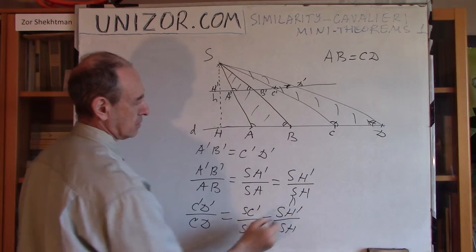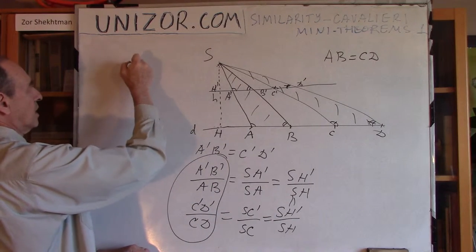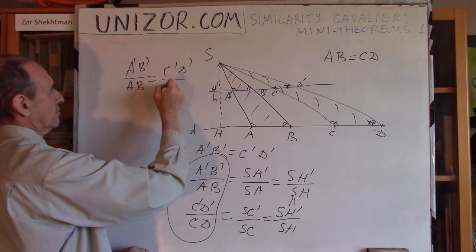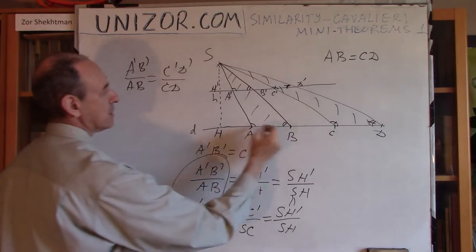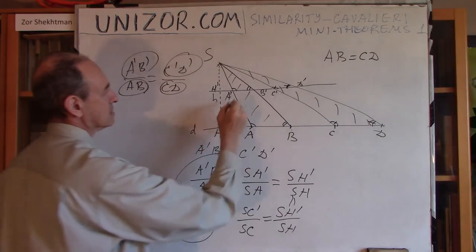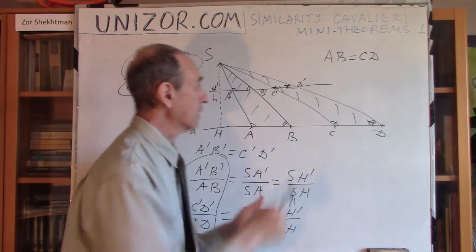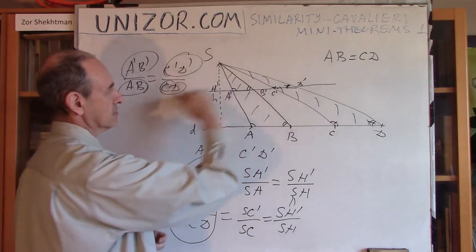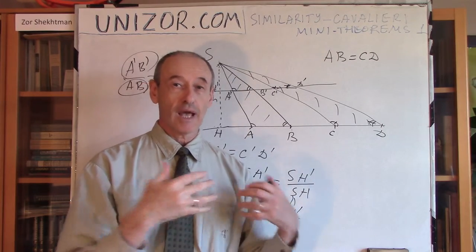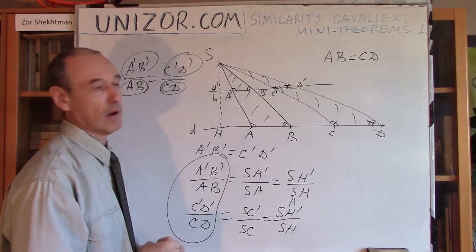These two ratios are equal, which means: A prime B prime divided by AB equals C prime D prime divided by CD. Now AB and CD are the same by assumption, so these two segments must be the same. This proves that any line parallel to the base cuts equal segments in both triangles. We have proven that the Cavalieri Principle holds for these particular two triangles, which means their areas are the same.